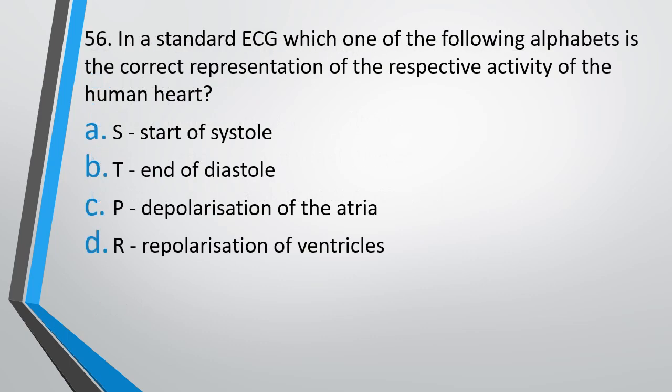Question number 56: In a standard ECG, which of the following is the correct representation of the respective activity of the human heart? The correct answer is option C — P represents the depolarization of atria.